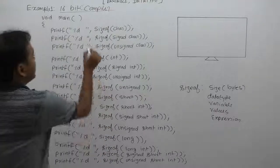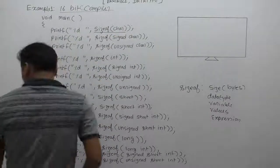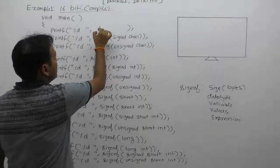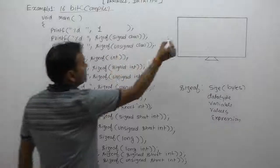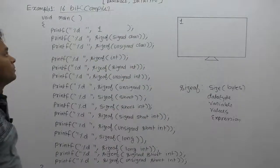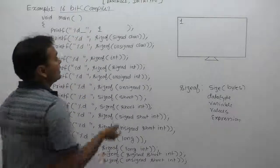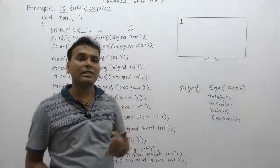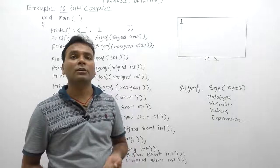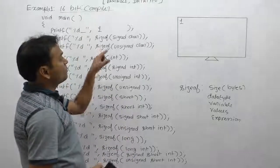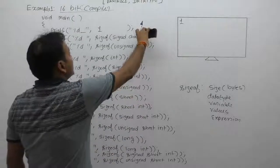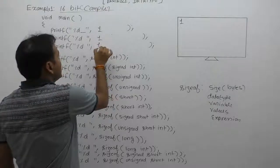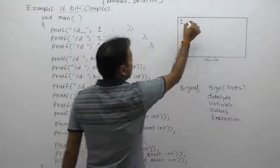In the first case, printf displays sizeof(char), which simply returns a value of 1. This is the output of the first printf. Here we are providing a space for separating different results. Next, we are using sizeof(signed char). As we discussed, the signed or unsigned qualifier does not affect the size of any variable. Therefore, signed or unsigned char — both cases give exactly the same size. Signed char size is also 1; the second and third printf also print 1.